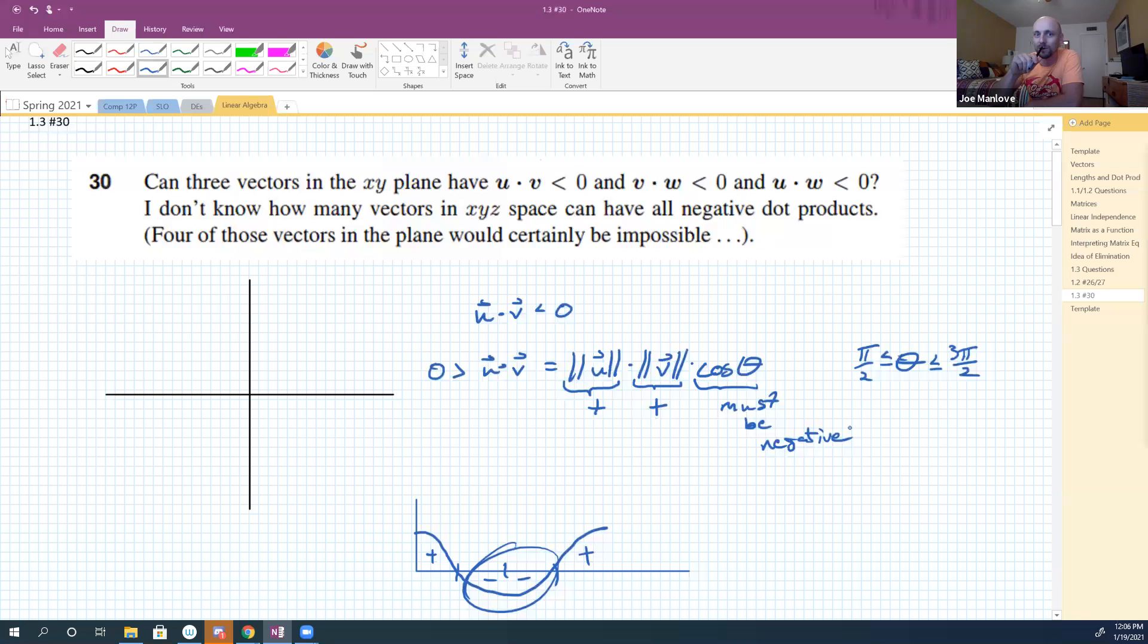But it's always the smallest angle between them, so it can't be above π radians. Let's see, so they certainly have to be more than 90 degrees. There has to be an obtuse angle between them.